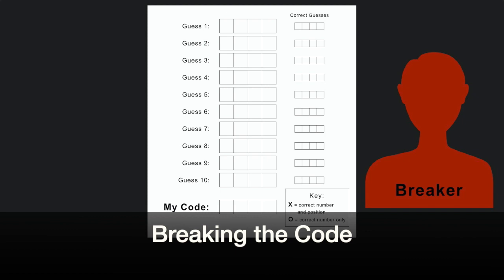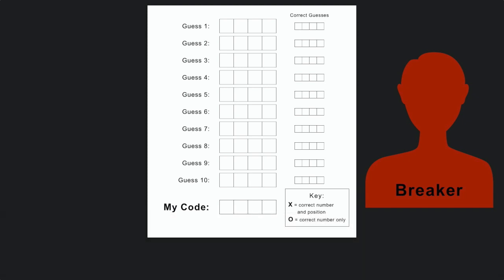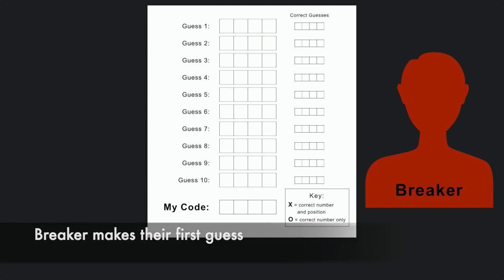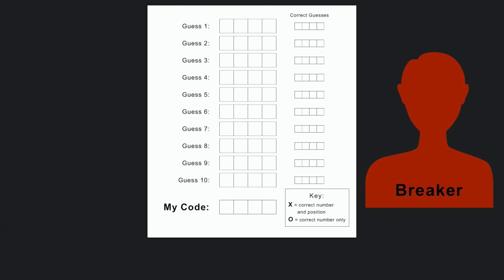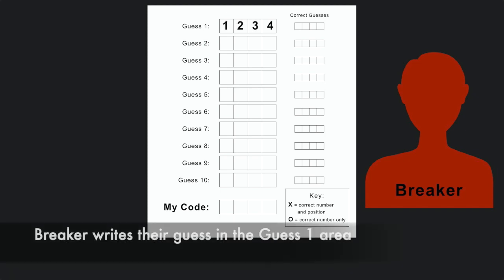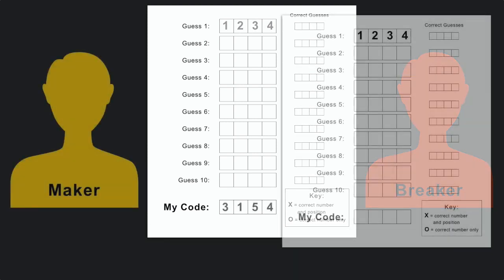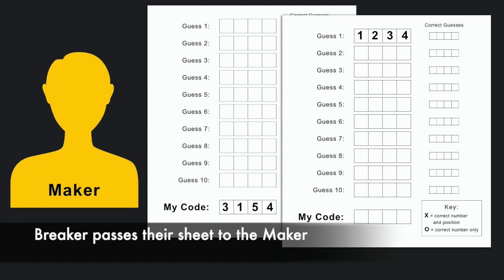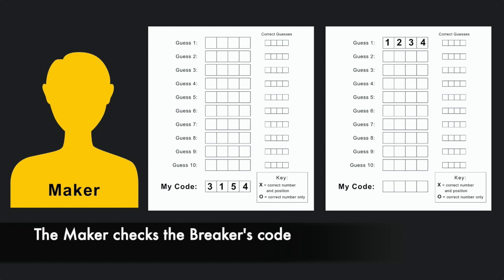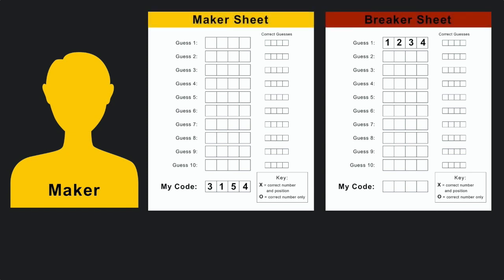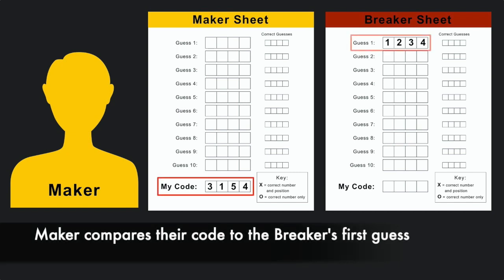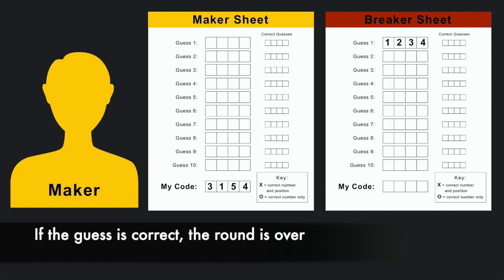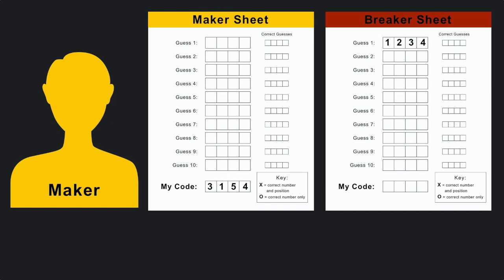After the code has been created and kept hidden, the code breaker will begin trying to break it. The code breaker starts by making their first guess, using any number from 1 to 6 with repetition allowed, writing their four-digit guess in the Guess 1 boxes. After making their guess, they will pass their paper to the code maker. The code maker will check to see if the code breaker correctly guessed their code. Most likely they will not, so the code maker will let them know if any part of their guess was correct.